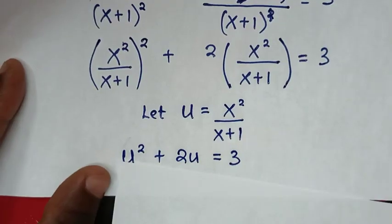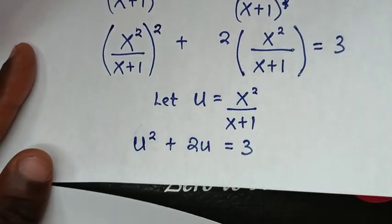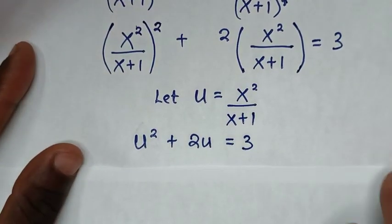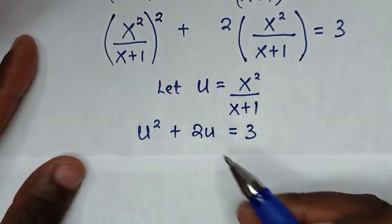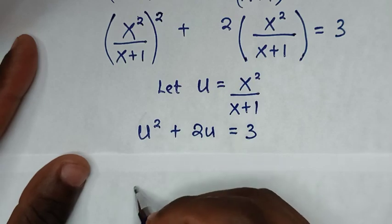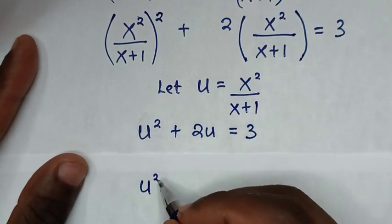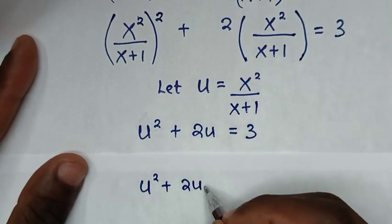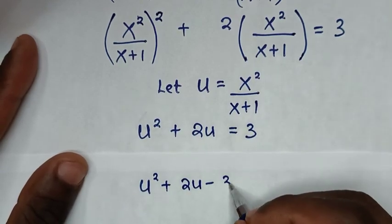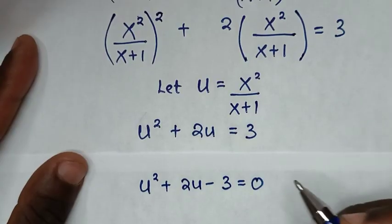So to continue to solve this equation, we will take 3 to the left side, so it will be u² + 2u − 3 = 0.